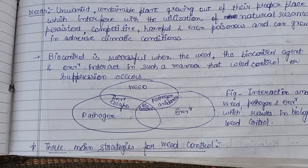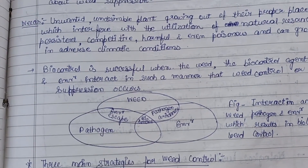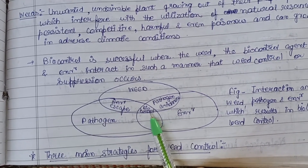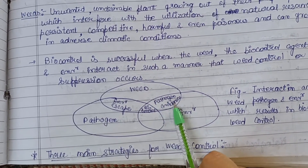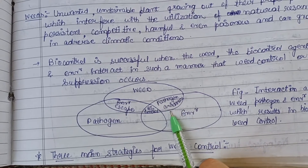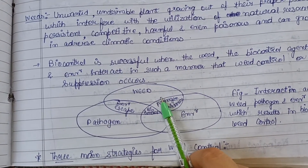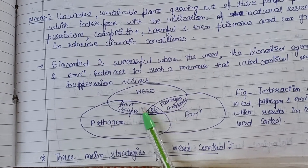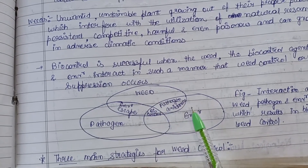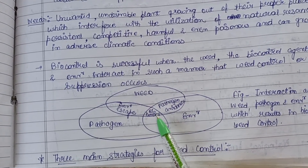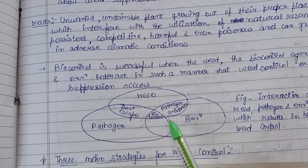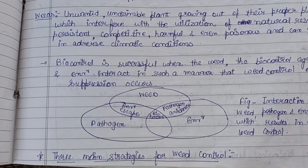In this interaction, the weed tries to avoid the pathogen — the microorganism mainly used to control the weed — through an environmental escape process, so that it does not interact with the environment and bio-control does not take place. For efficient bio-control, all three components — weed, pathogen, and environment — must interact properly. There are three main strategies for weed control through biological agents.